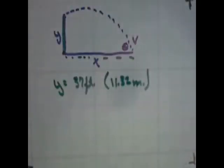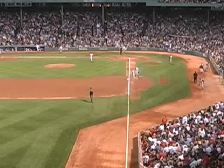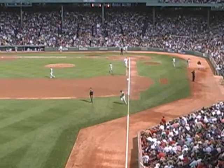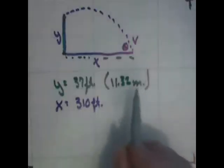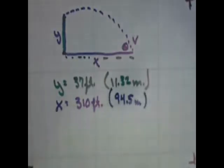Now the x distance, the distance to that wall, is a mere 310 feet, which is very short for a baseball diamond. That turns into about 94.5 meters. So there's our x and y distances.